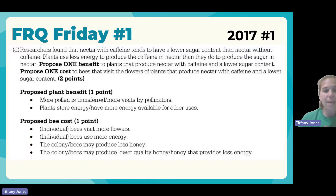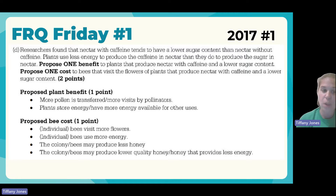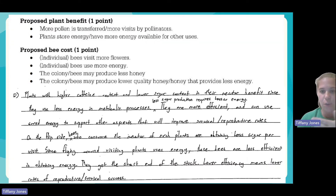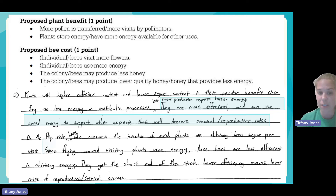Alternatively, you could discuss the colony: bees getting less sugar produce lower-quality honey with less energy, or they can make less honey overall. The student response noted that the plant is more efficient, using stored energy to support survival and reproductive rates. For the bees, flying around visiting more plants uses more energy, making them less efficient at obtaining energy. I hope that was helpful — stay tuned for next week's FRQ Friday!